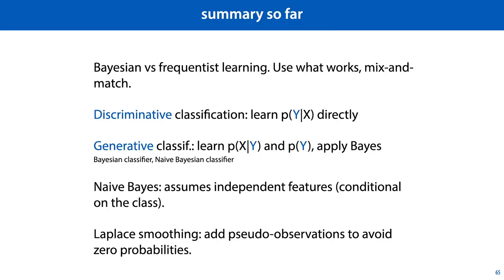So what have we seen? We recapped the difference between Bayesian and frequentist learning, emphasizing that we can use what works and mix and match if necessary. We've looked at the difference between discriminative and generative classification, and seen examples of generative classifiers — specifically a Bayesian classifier and a naive Bayesian classifier — which assumes independent features conditional on the class. We've also looked at Laplace smoothing, a way to add pseudo observations to avoid zero probabilities. In the next video, we'll look at one of the most famous discriminative classification methods: logistic regression.